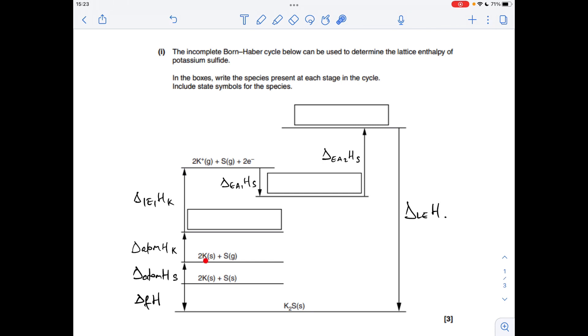The next thing we do is atomise this potassium. So what we're going to have at this level would be 2K gaseous atoms. Obviously, this sulphur has already been turned into gaseous atoms. So that's what you need to put in that box there.